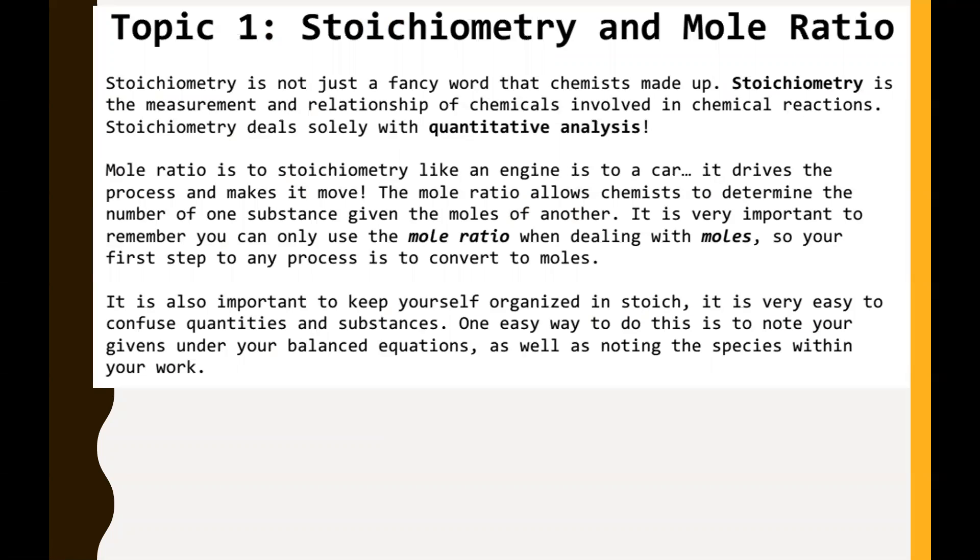Stoichiometry is not just a fancy word that chemists made up. Stoichiometry is the measurement and relationship of chemicals involved in chemical reactions. All stoichiometry is about is predicting how much of something will be produced following a chemical reaction. We've done quite a bit of this before. It all involves having a balanced chemical equation to start with.